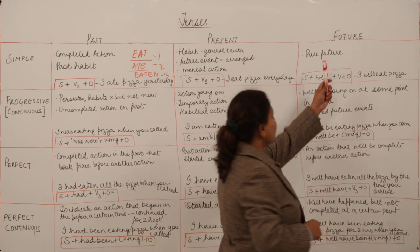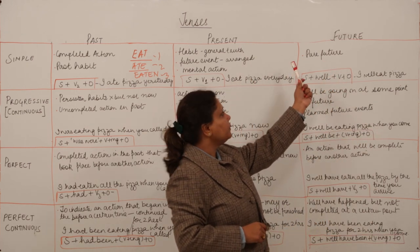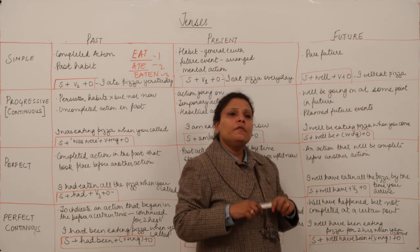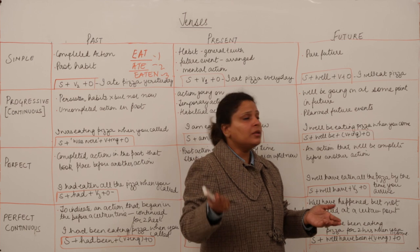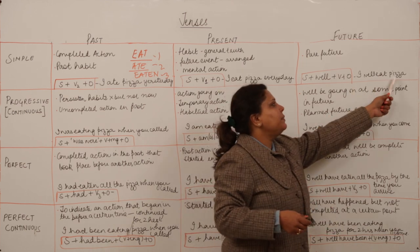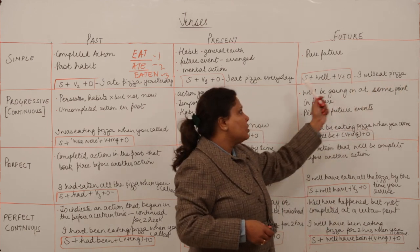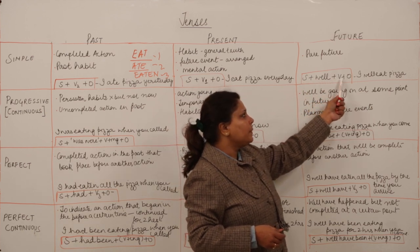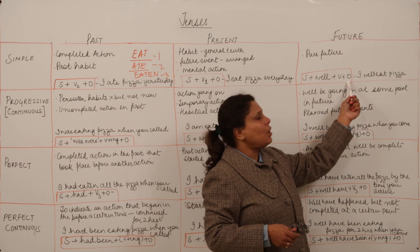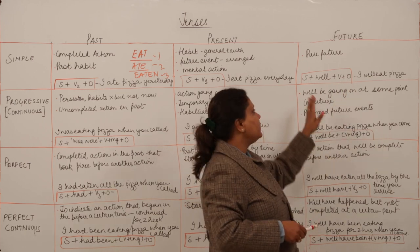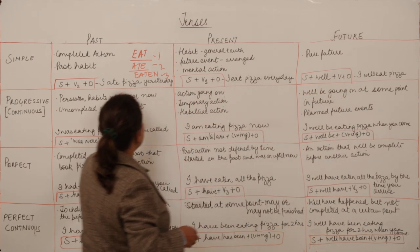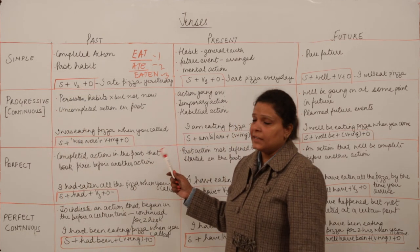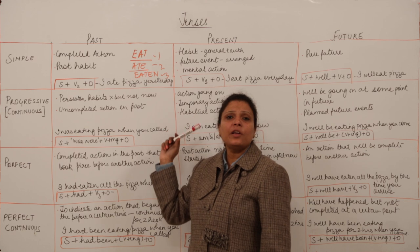Similarly, the simple future tense is used for pure future when you are willing to do an action in the future. 'I will eat pizza tomorrow.' So it will be: subject + will + verb (basic form) + object. These standard formulas you have to remember so that you are able to form the correct sentence, and it will also help you in the reordering assignment.